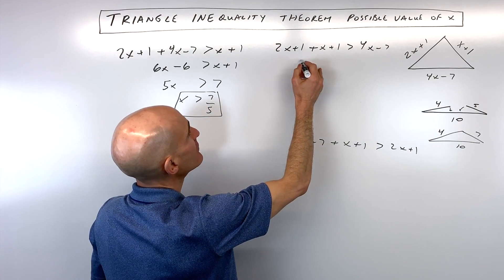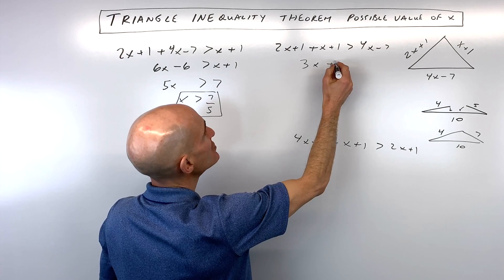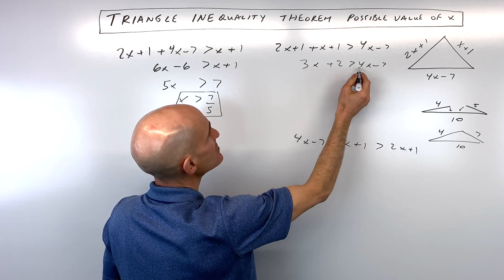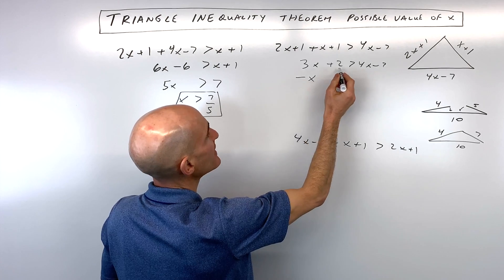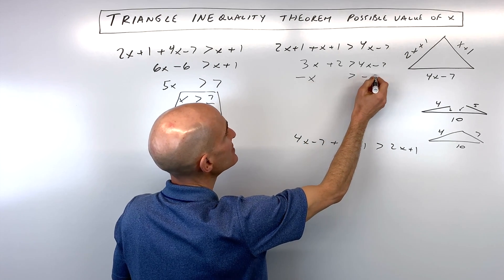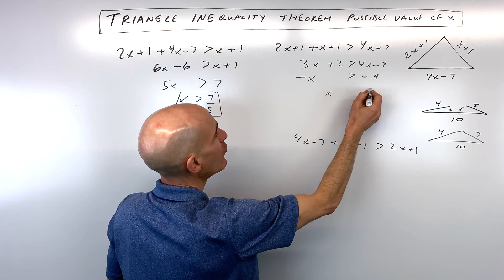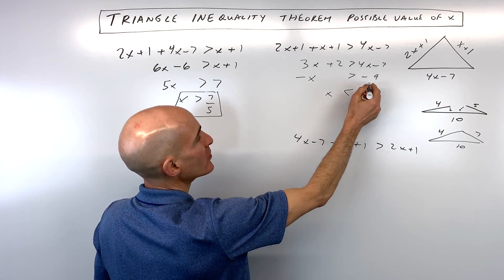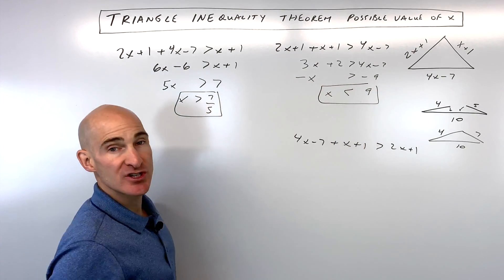Now over here we're going to solve, this gives us three x, one plus one is two. Here if I subtract four x, that's going to be negative one x. If I subtract two from both sides, that's going to give us negative nine. If I divide both sides by negative one, whenever you multiply or divide both sides by a negative number, the inequality sign flips or changes direction.